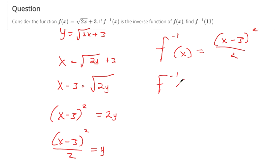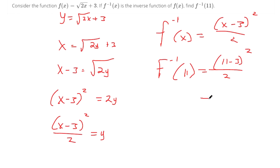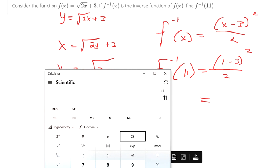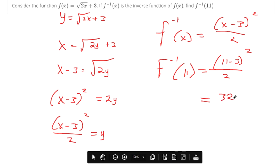So we need to find out when we plug in 11 in for x. So if you simplify that, 11 subtracted by 3 is 8. 8 squared is 64. 64 divided by 2. We get 32 out of our inverse function.